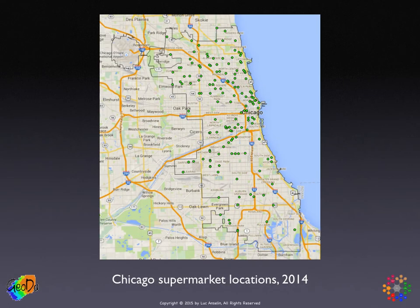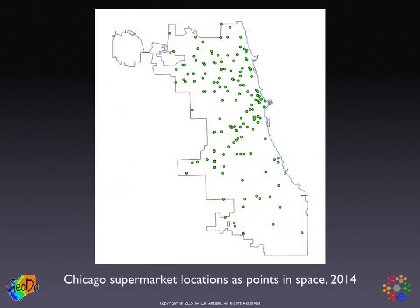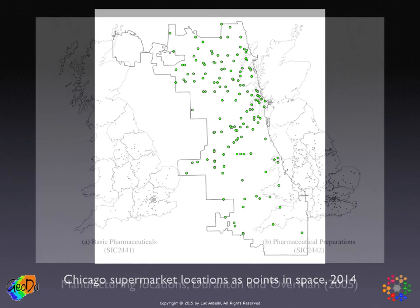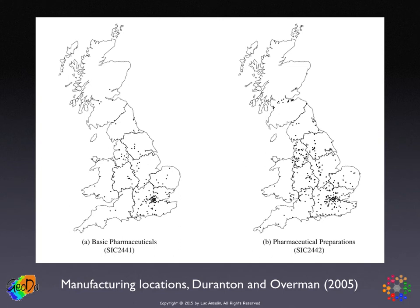Similarly, we can look at the locations of supermarkets — in this case, in the city of Chicago. The black boundary shows the outline of the city and the green dots are the locations of the supermarkets. Again, these are situated on the street network. This particular example we'll be using throughout the class presentations, and also as a major data source for analysis in the lab. If we take away the background, we end up with the points floating in space, constrained by the boundary of the city of Chicago.